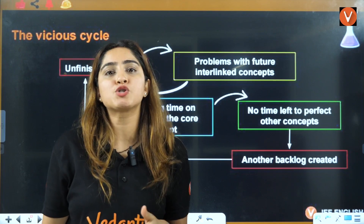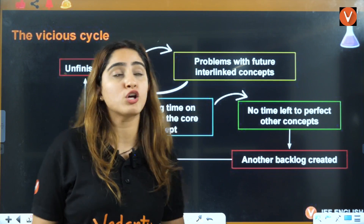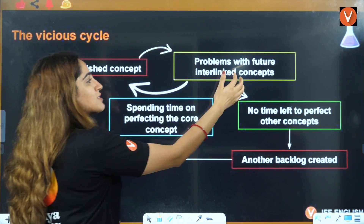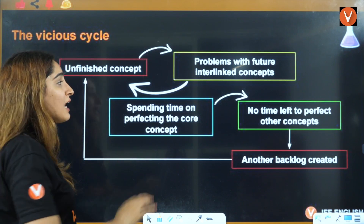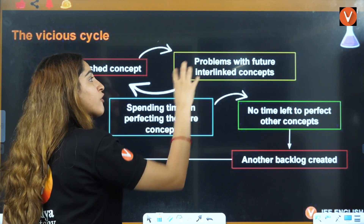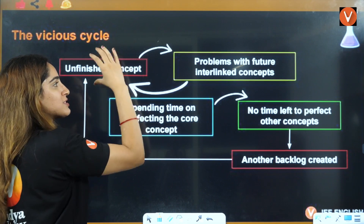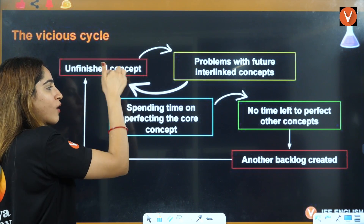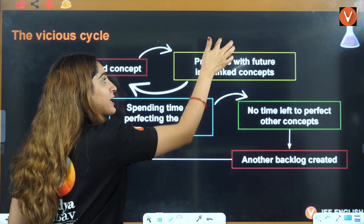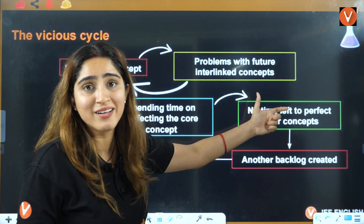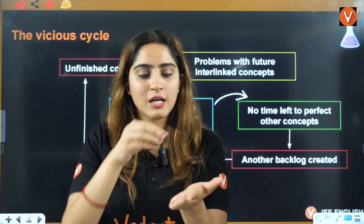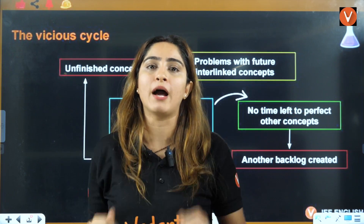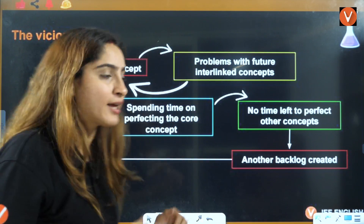Whenever we talk about backlogs, the main reason students are not able to cover them is because they're stuck in a loop. They already have unfinished concepts, and the next concept is linked to the previous one. They want full confidence on that concept, but since they can't understand it, they keep re-reading it — and by doing so, they end up creating yet another backlog. So while covering one backlog, they're creating another.